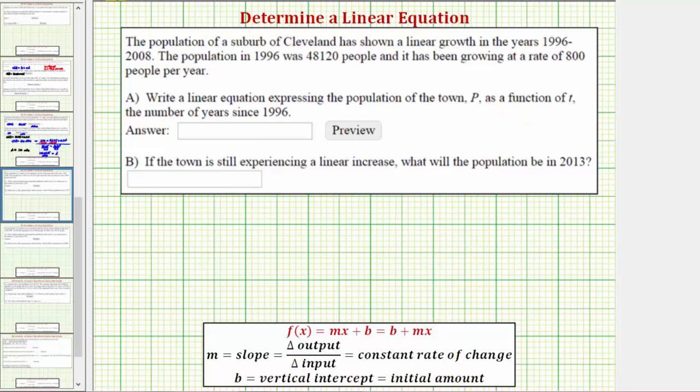But in this case, because we have a function of t, our function will be P(t) equals, let's use the second form, so we'll have b plus mt. Notice how we're using the input variable t, rather than the input variable x.